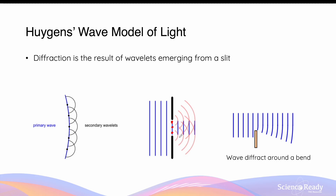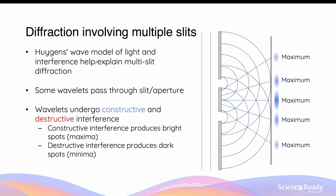This explains why the extent to which a wave diffracts increases when the size of the slit decreases, as fewer numbers of wavelets can pass through the opening. When a wave passes around the edge of an object, it also undergoes diffraction, because some of the waves that form the original wavefronts are not able to pass through the object. Due to the absence of these wavelets, the new wavefronts will appear to scatter or propagate outwards after travelling around the bend.